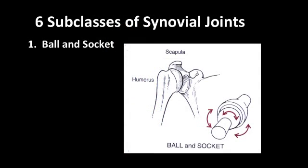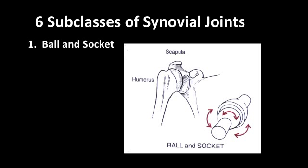The first subclass is a ball and socket joint. The shoulder, or glenohumeral joint, is the best example — the head of the humerus creates a ball that fits into the socket, or glenoid cavity, of the scapula. This is the most freely movable joint in the body and allows for a movement called circumduction. The hip joint, where the femur articulates with the os coxa, is also a ball and socket joint, though it's not nearly as freely movable as the shoulder due to the muscularity of that joint.